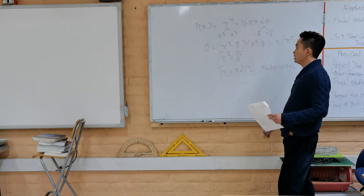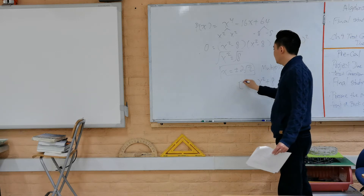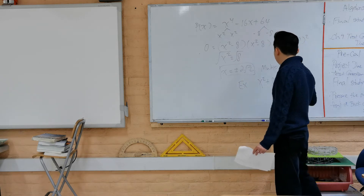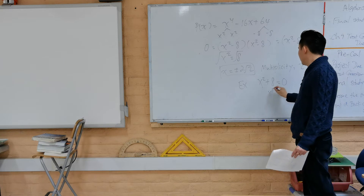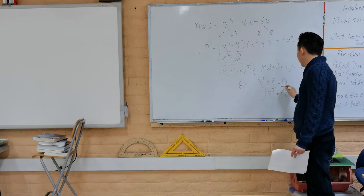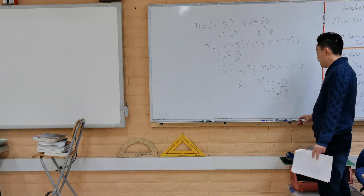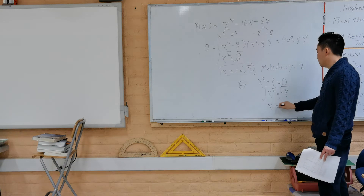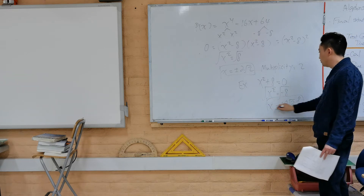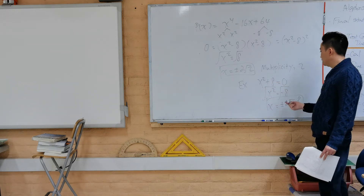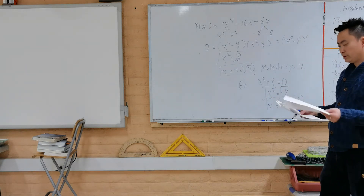There's no need to fear the square root of a negative number — that gives imaginary solutions. So for x² + 8 = 0, the solutions are x = ±2i√2. The process is the same; it just results in imaginary numbers.